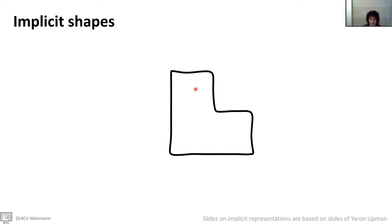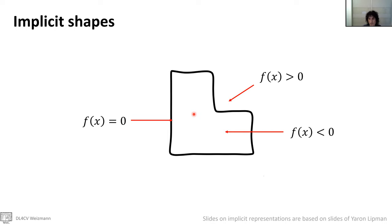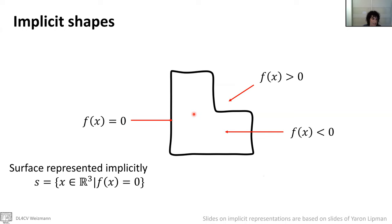Here comes the idea of using implicit functions. How to represent a shape with an implicit function? For example, here we have an L shape. We are interested in a function such that on the outside it will be positive, on the inner side of the shape it will be negative, and on the shape itself it is going to be zero. In other words, the implicit shape representation is like writing a shape as a zero-level set of some function f.